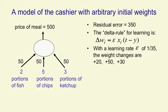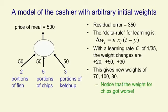If we make the learning rate be 1 over 35, so the math stays simple, then the learning rate times the residual error for this particular example is 10. And so our change in the weight for fish will be 2 times 10, we'll increase that weight by 20. Our change in the weight for chips will be 5 times 10, and our change in the weight for ketchup will be 3 times 10. That'll give us new weights of 70, 100, 180. And notice, the weight for chips actually got worse. There's no guarantee with this kind of learning that the individual weights will keep getting better. What's getting better is the difference between what the cashier says and our estimate.